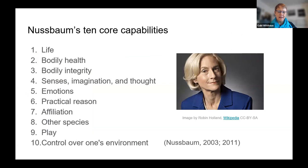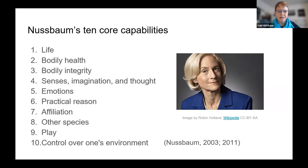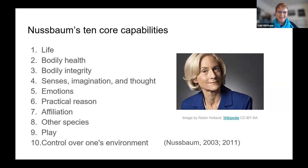Sen is a philosopher and economist. Martha Nussbaum — also a philosopher and legal scholar — took the capabilities approach in a slightly different direction. She said that for democratic societies to properly serve their citizens, they need to ensure a threshold level of 10 core capabilities for everyone. These include: life, bodily health, bodily integrity, senses/imagination/thought, emotions, practical reason — often associated with agency, the idea of conceptualizing a good life and acting on it — affiliation around social participation, relations with other species, play, and control over one's environment.